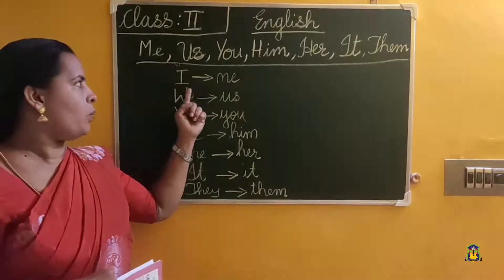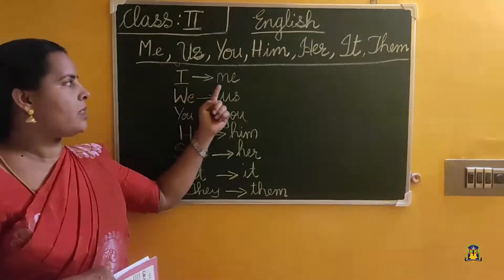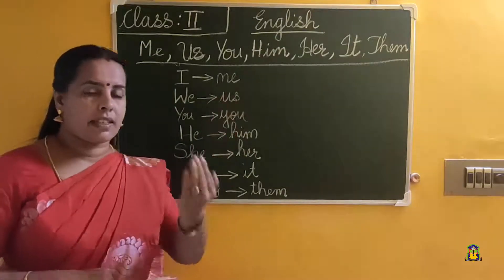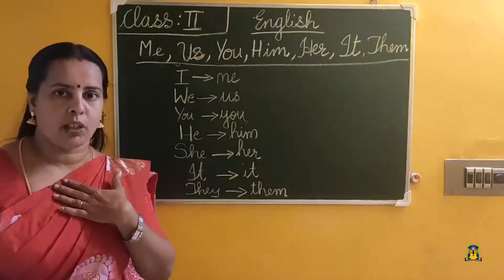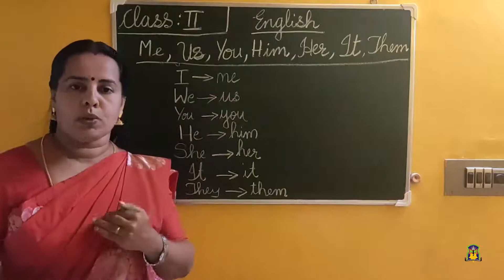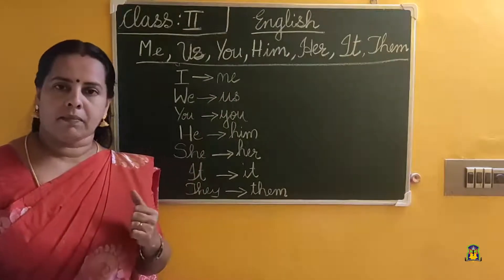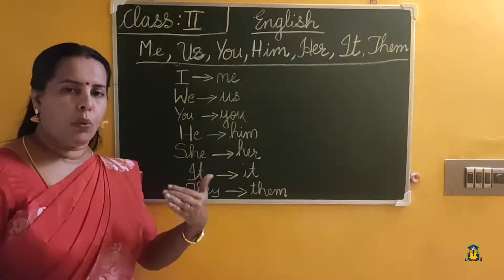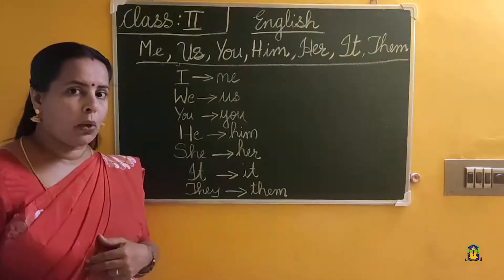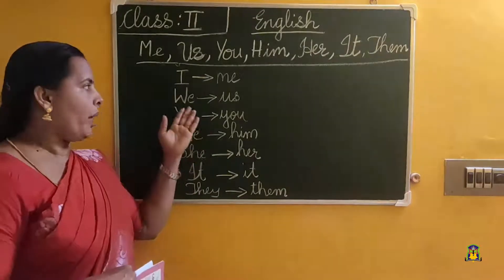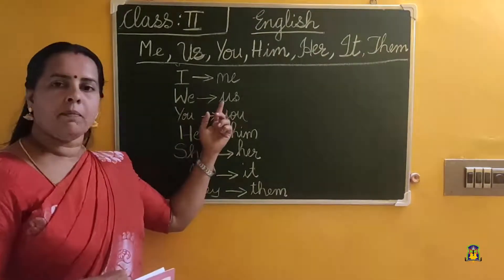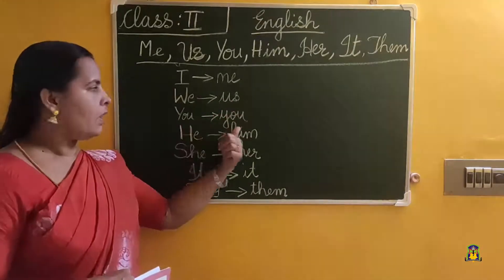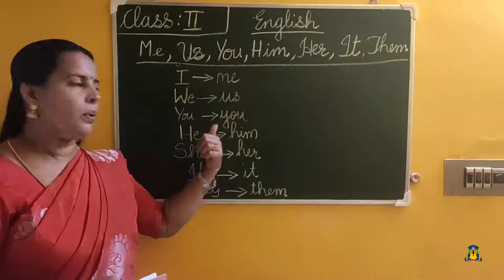With the pronoun I, when I receive an action, we use the object pronoun me. We means I and somebody else. When two persons are there, it is plural. So when we receive an action, we use us. For you, the object pronoun is also you itself.